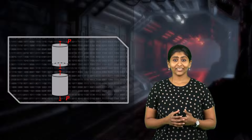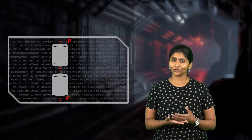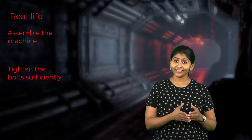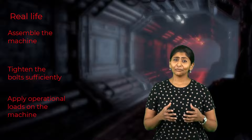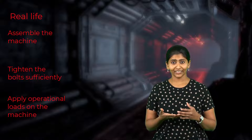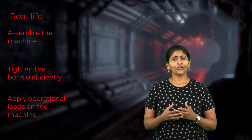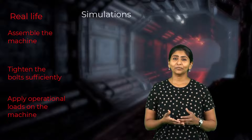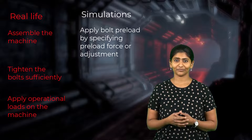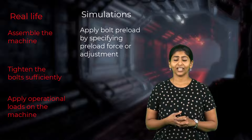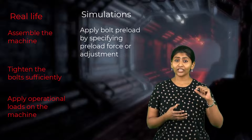If the bolt is represented by a line body, we can use a similar procedure to split the line into two. In real life, a machine is first assembled by tightening the bolts completely, and then operational loads are applied. Since simulations mimic real-life scenarios, we can specify the order in which loads are applied, called steps. For any simulation involving bolted joints, we first load the bolts in step one by applying the preload force to simulate the assembly process. An overlap of the bolt occurs, which represents the shortening of the grip length — we call this amount of displacement the adjustment.